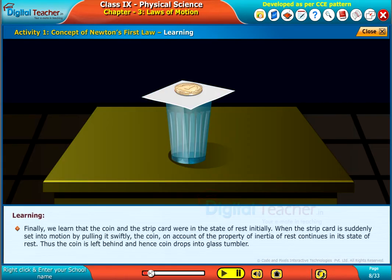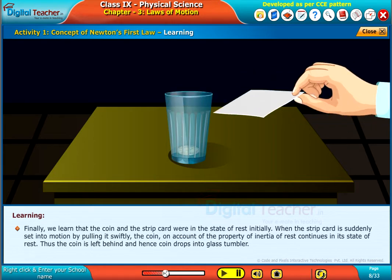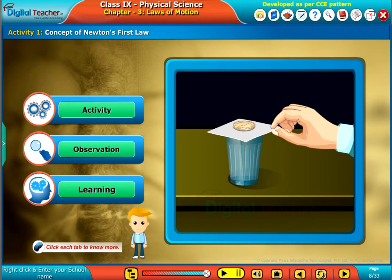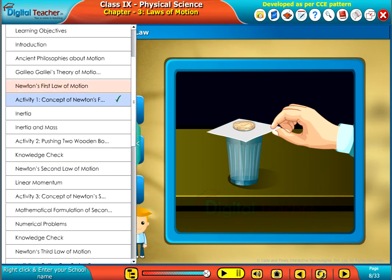Finally, we learned that the coin and the strip card were in the state of rest initially. When the strip card is suddenly set into motion by pulling it swiftly, the coin, on account of the property of inertia of rest, continues in its state of rest. Thus, the coin is left behind and hence the coin drops into the glass tumbler.